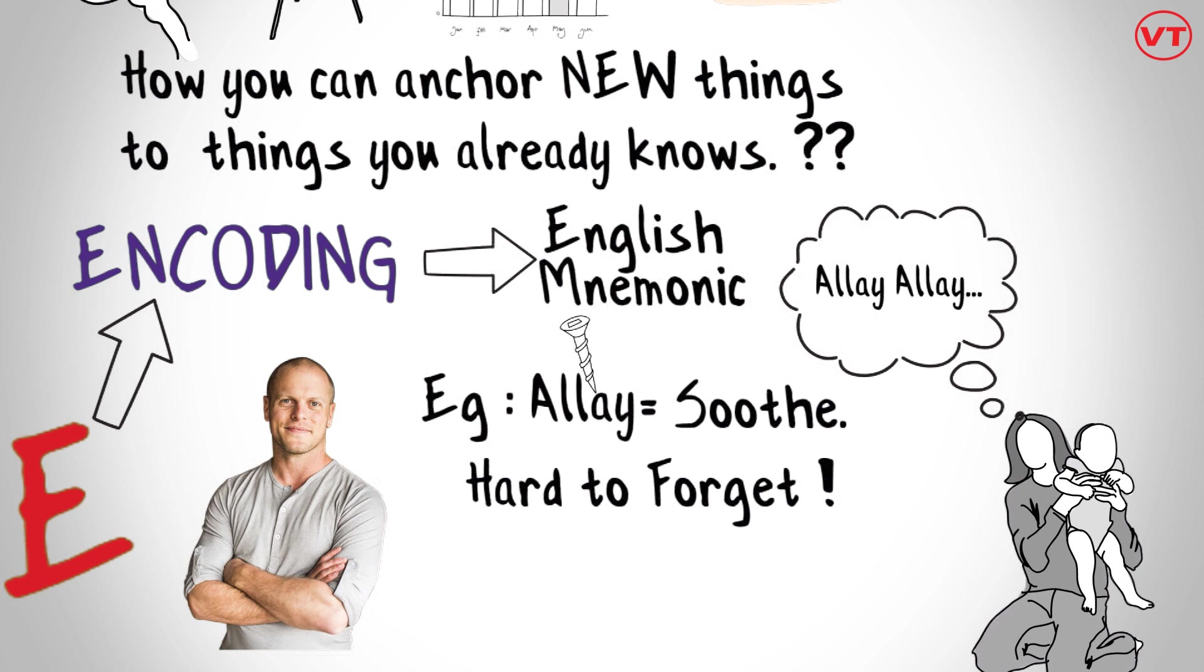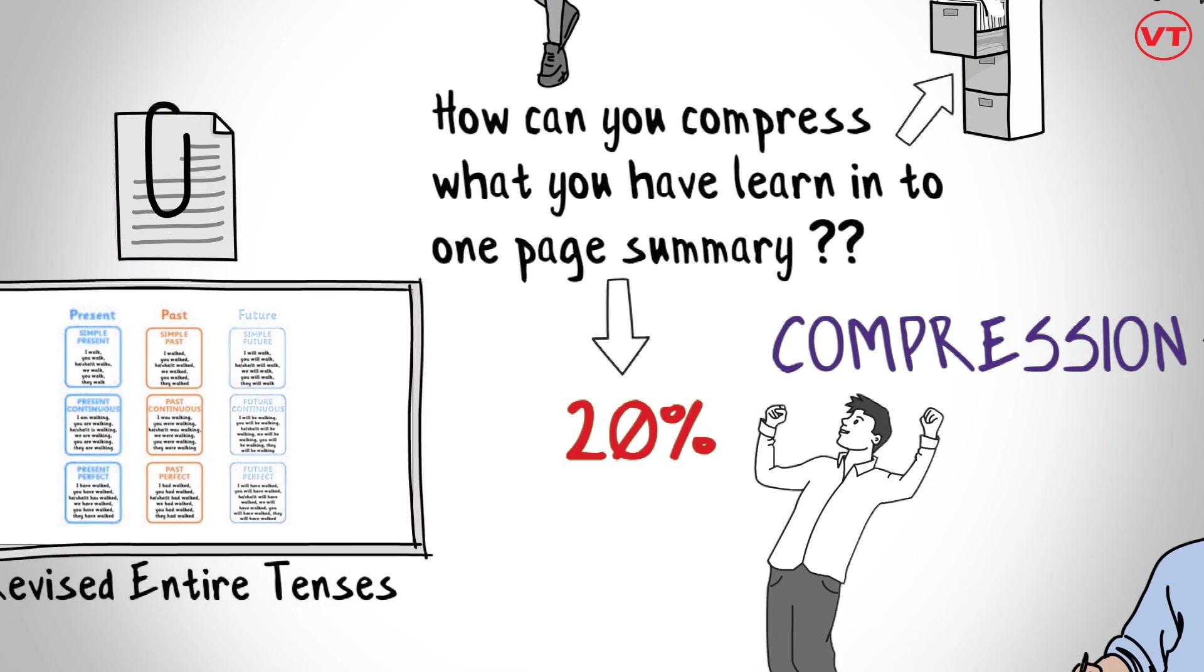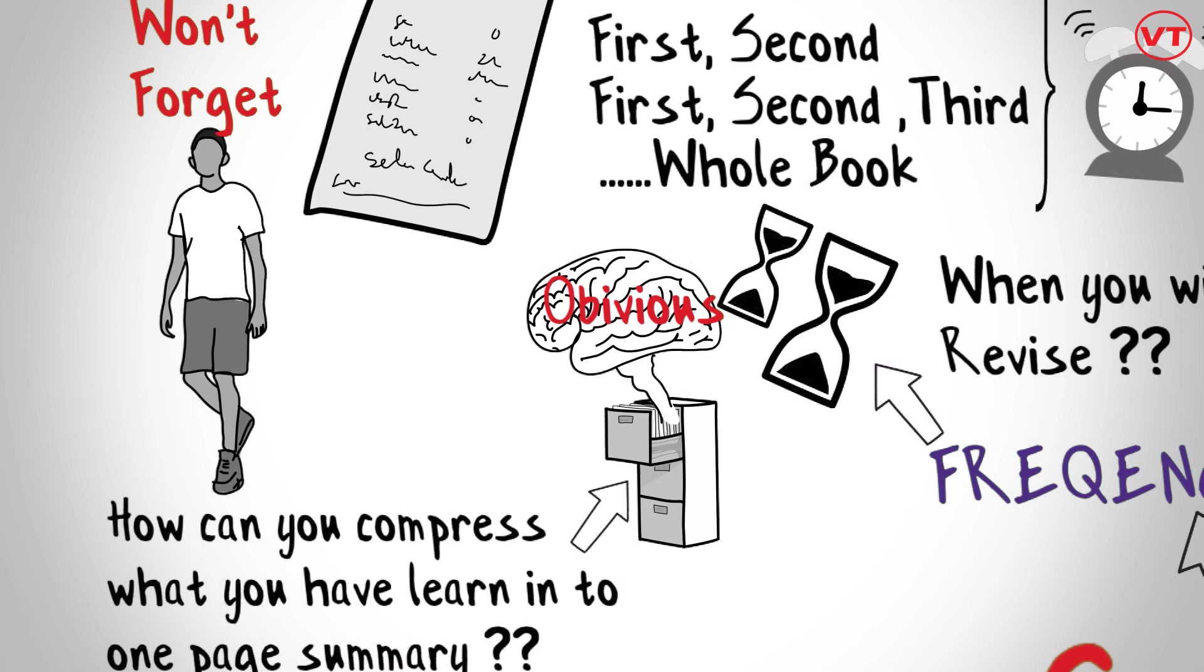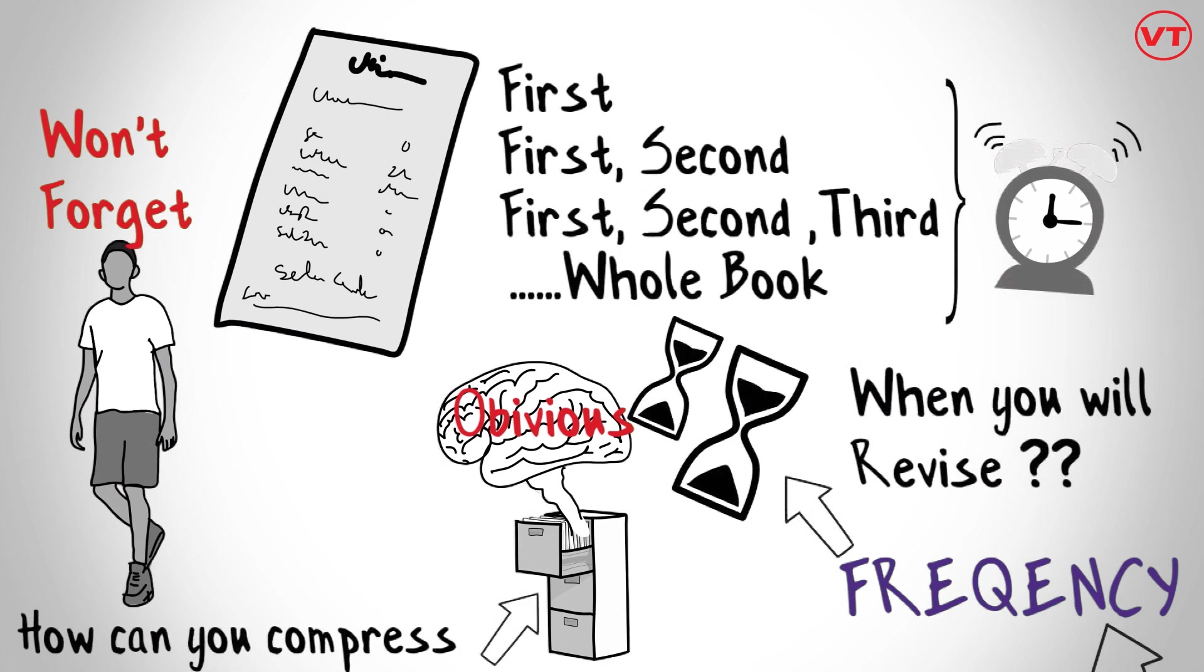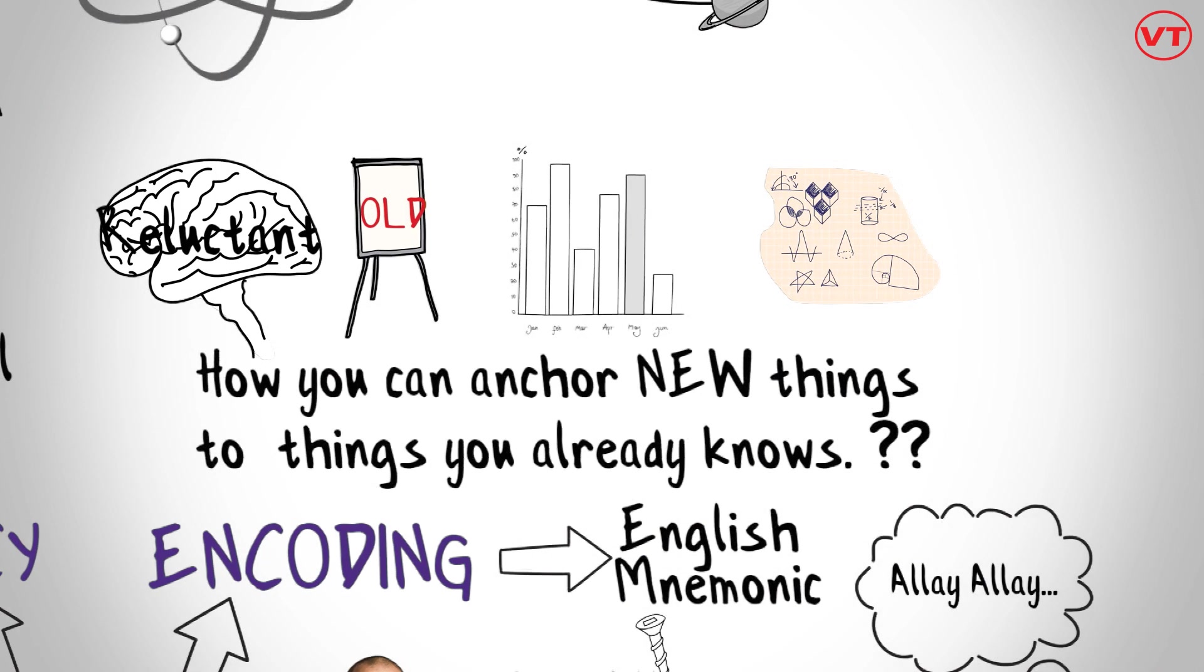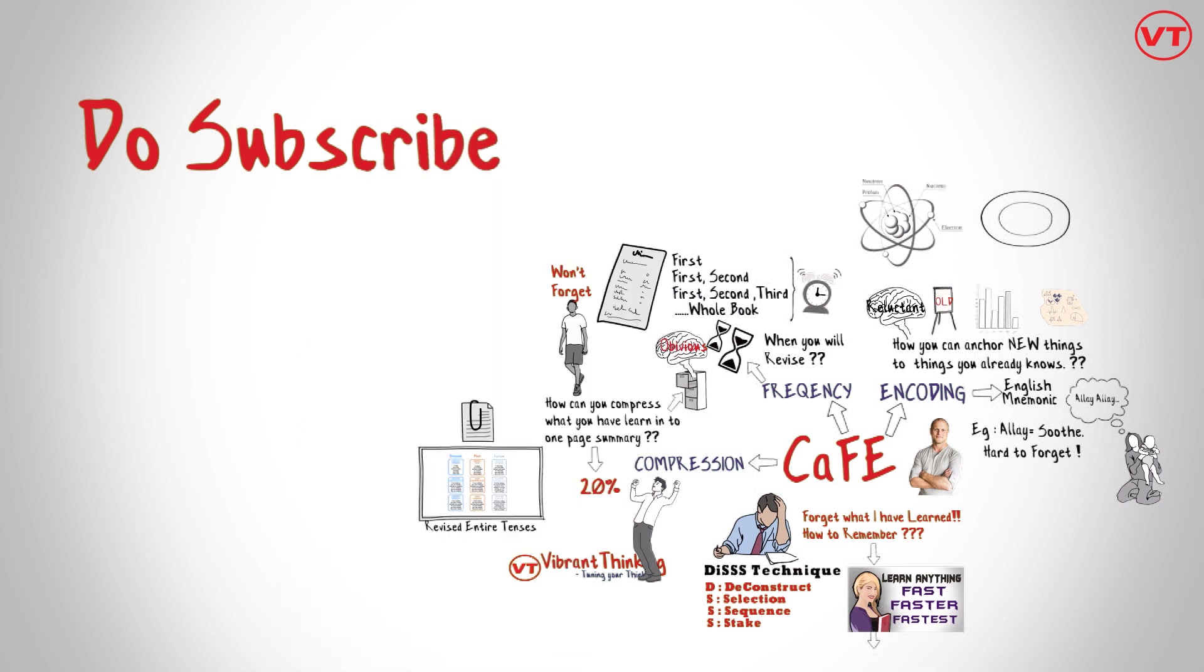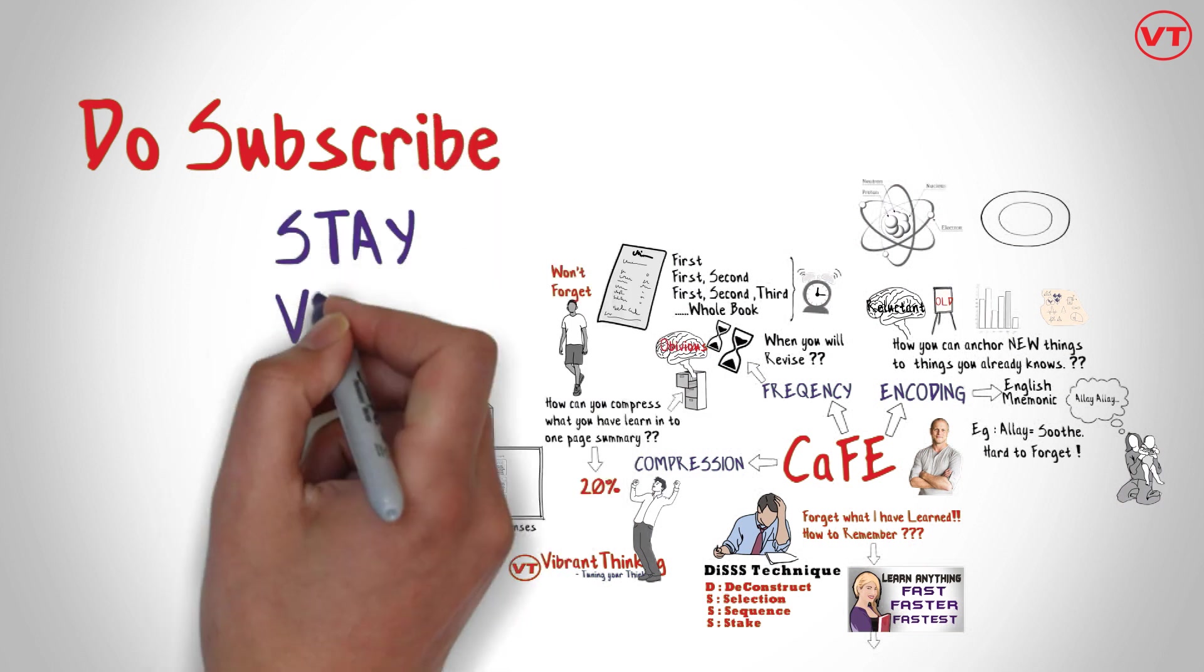So revising the main points from this video: first, compress most essential 20% into one page summary. Second, decide the frequency during which you will revise your compressed one page summary. Third, encode the new learning into something which you already know. If you like this video, do subscribe to our channel. Until next video, stay vibrant.